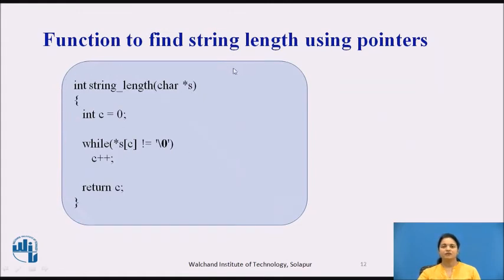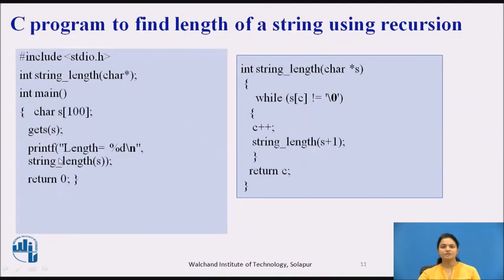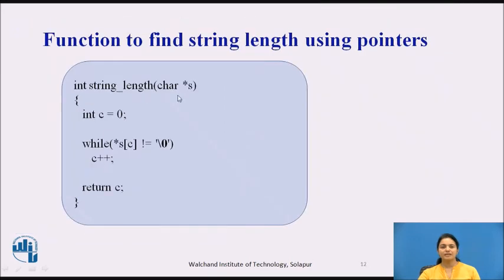Here we are using the same pointer approach to check the length of any string. The function integer string_length receives a pointer passed from the main program — the start of the string as a character array. Counter is set to 0. While the pointer is not pointing to the null character, we increment the counter. Finally, we return the counter value 'c', which gives the string length.